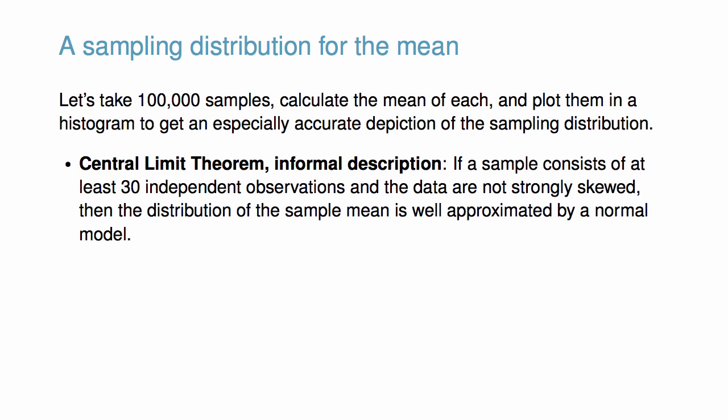Informally, we can describe the Central Limit Theorem as follows. If a sample consists of at least 30 independent observations and the data are not strongly skewed, then the distribution of the sample mean is well approximated by a normal model.